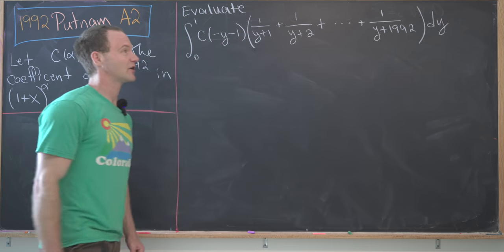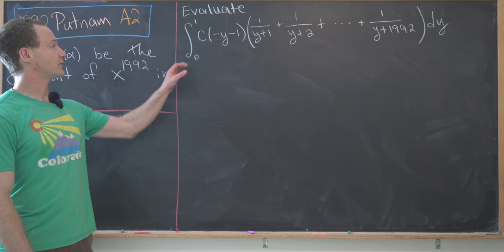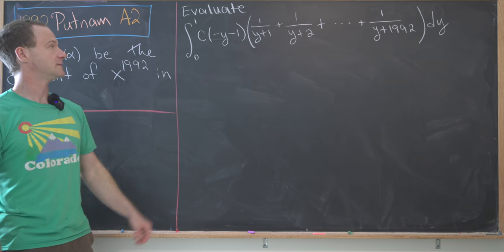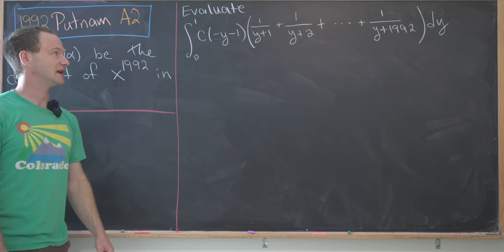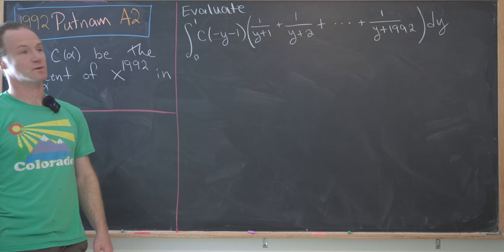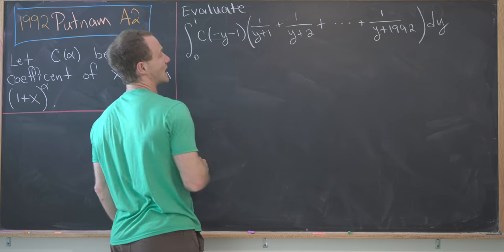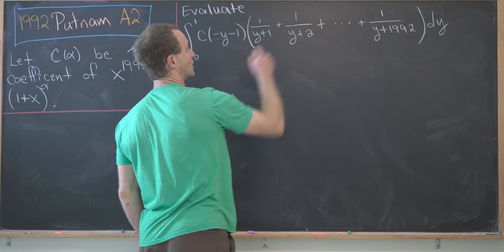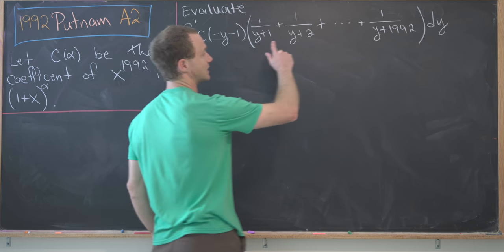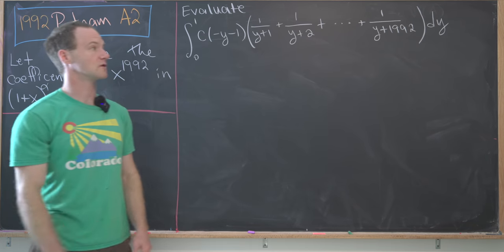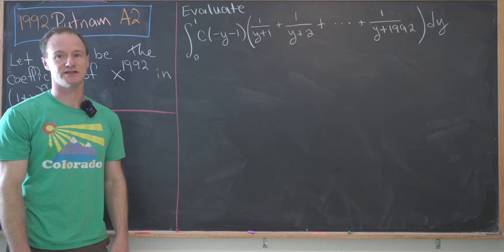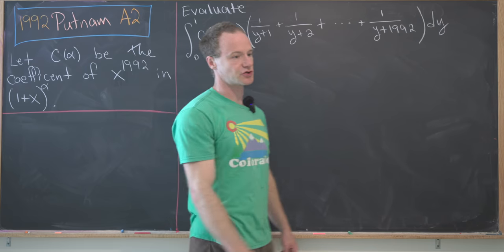And then we want to evaluate the following integral. We've got the integral from 0 to 1 of c evaluated at -y-1 times the quantity 1/(y+1) + 1/(y+2) + 1/(y+3) all the way up to 1/(y+1992). So let's see how the solution goes.